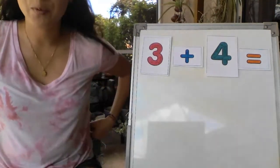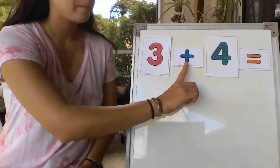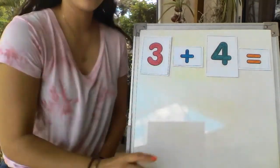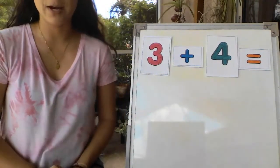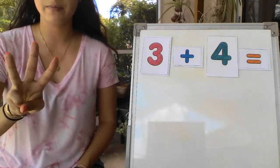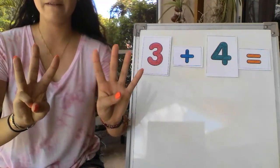The next example we're going to do is, read it with me, 3 plus 4 equals. So we're going to do it all three different ways again. Ready? The first one is with fingers. So put 3 fingers up and then 4 on the other one. Let's count how many fingers we have up.